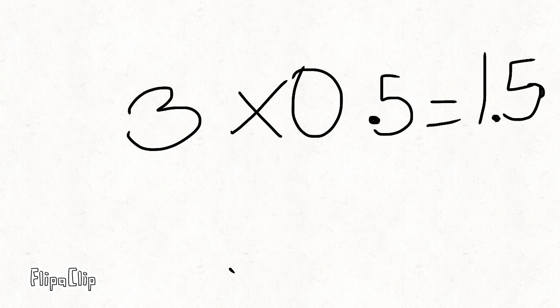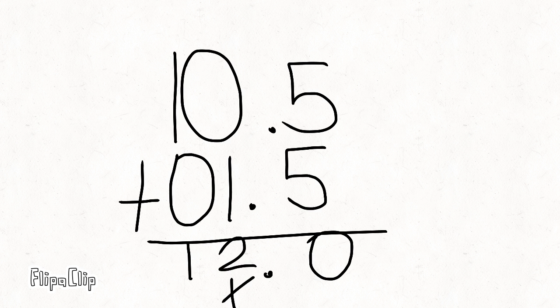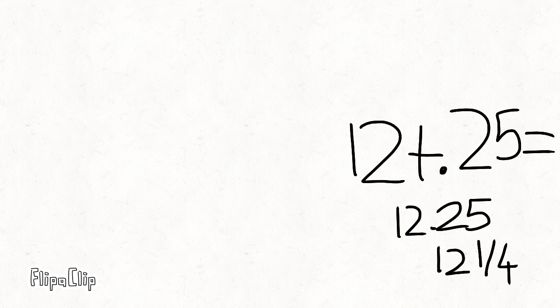Now add 9 with 1.5. Then do half times 3 and add that. Finally, do half times half. Add everything together and you should get 12 and a quarter — 4 easy steps, and you'll get a square for every answer you've got.